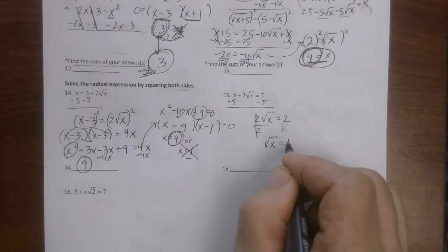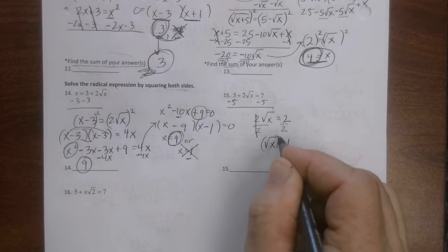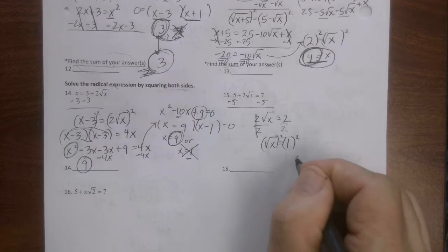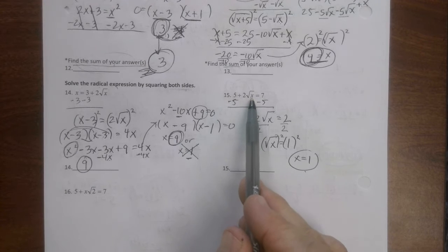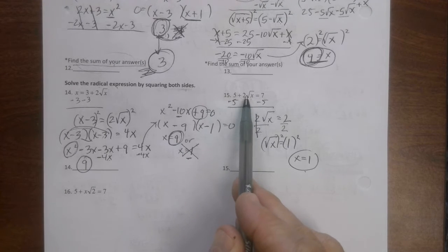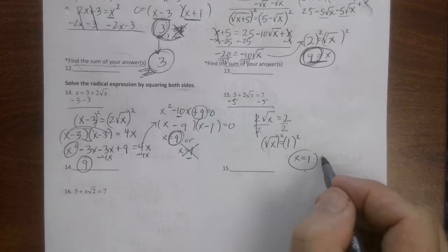And I get the square root of x equals one. I mean you could just look at it, but let's go ahead and follow through. X equals one. Wait a minute, plug it back in. What's the square root of one? One. What's one times two? Two. Five plus two is seven. Does seven equal seven? Yeah, ding ding ding. There's our answer.